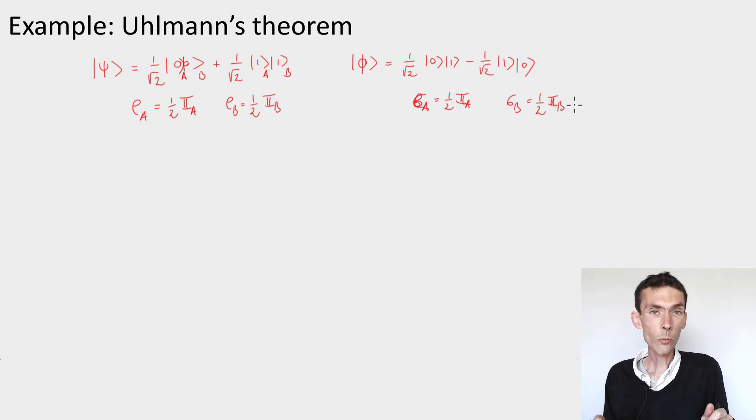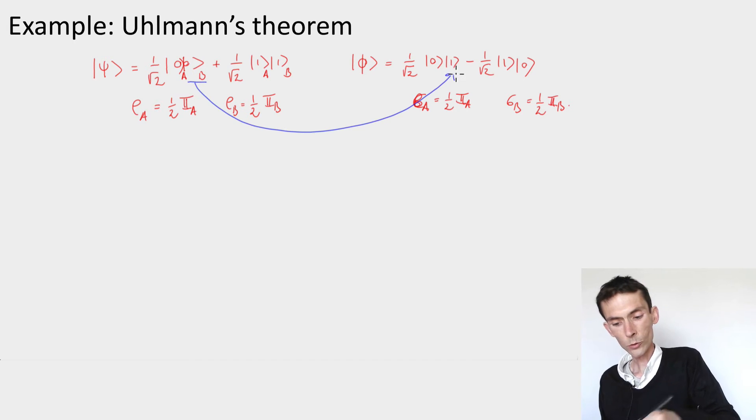The proof that you could not possibly tell the difference is given by Uhlmann's theorem, which says that it's possible to go from psi to phi by acting on the B system only. So there is a unitary which acts on B only, maps the one to the other.